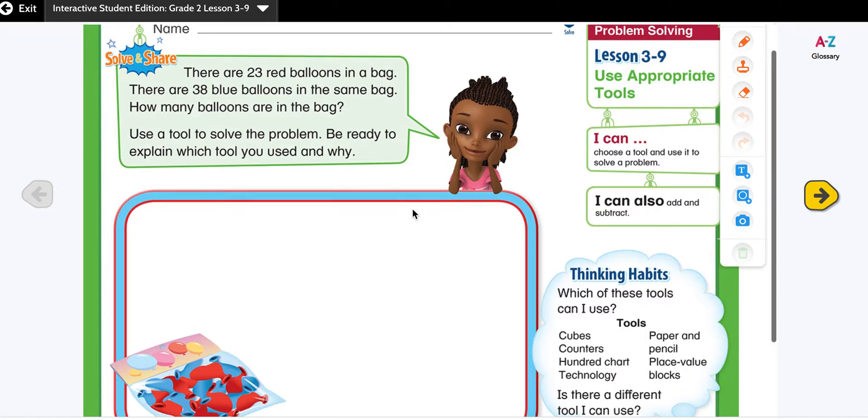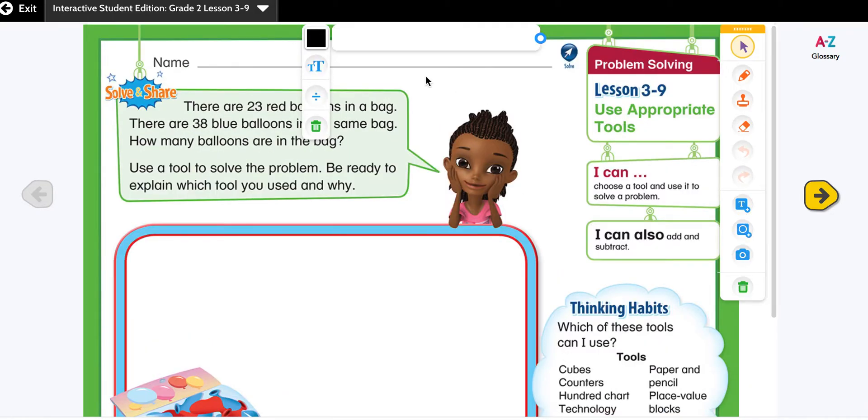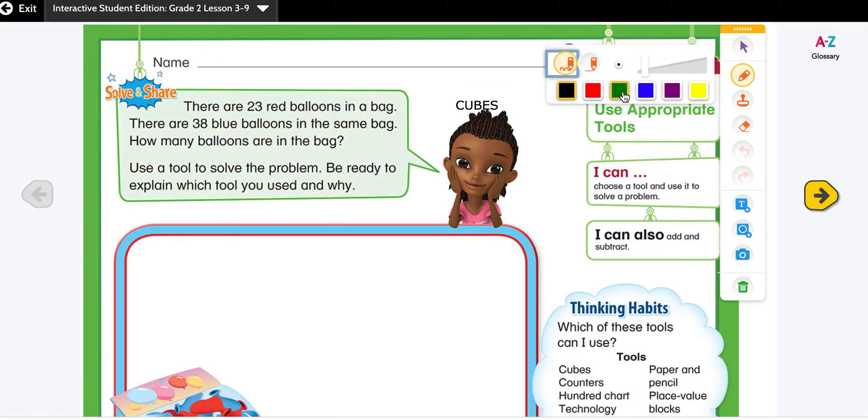Let's look at our CUBE strategy first to solve a word problem. We have our cube strategy. Let's drag it. C stands for circle the key numbers, so we are going to circle the key numbers. Numbers are 23 and 38.